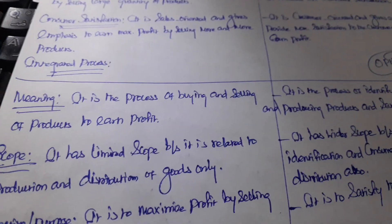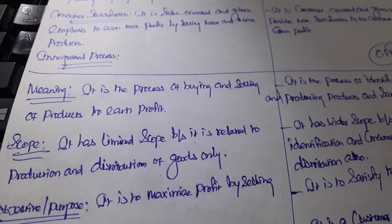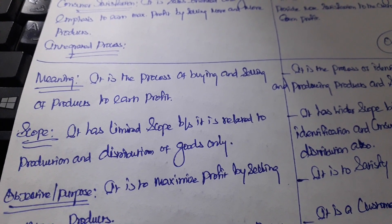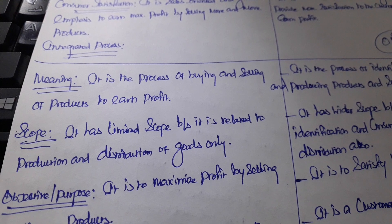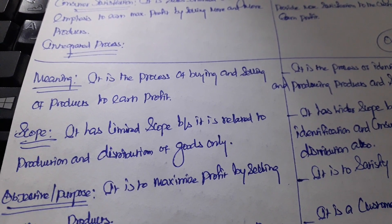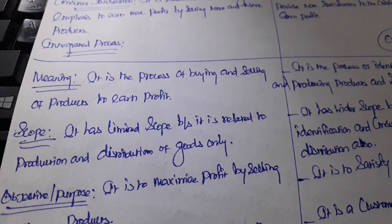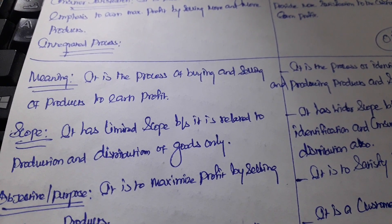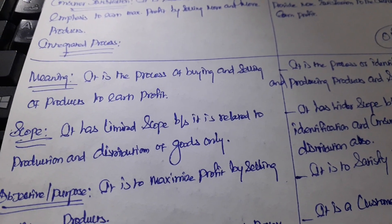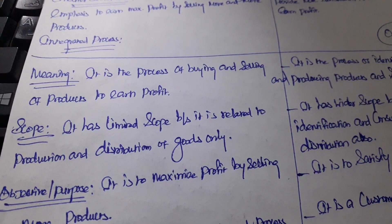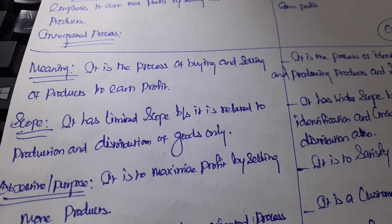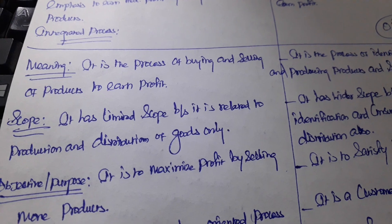Good evening everyone. Today's topic is about the old concept of marketing versus the new concept of marketing — an important topic in elements of marketing. The old concept of marketing is the process of buying and selling of products to earn profit, and its main aim is to earn profit by selling or buying more products.